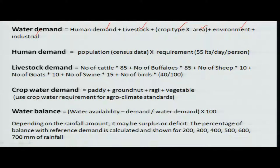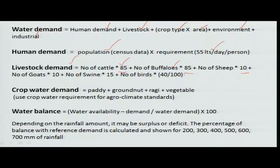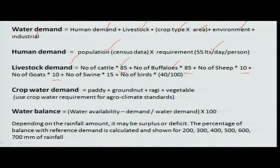Human demand is calculated from census population data at a rate of around 55 liters per person per day. For livestock demand: cattle and buffalos at 85 liters each, sheep at 10 liters per day, goats at 10 liters per day, and birds at 40 liters per 100 birds. These are the standard water requirements for different livestock. For crop water requirement, crops like paddy, groundnut, ragi, and vegetables have established water requirements depending on agro-climatic conditions.